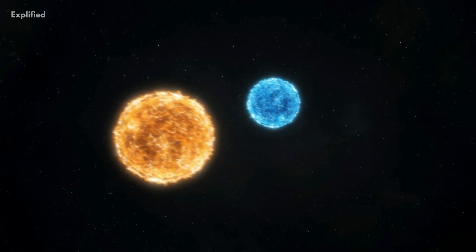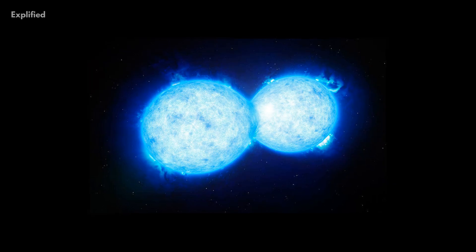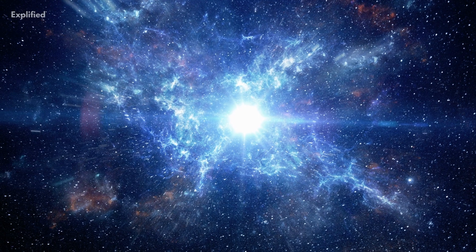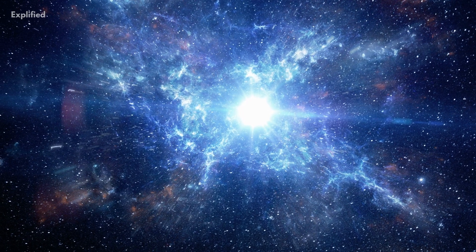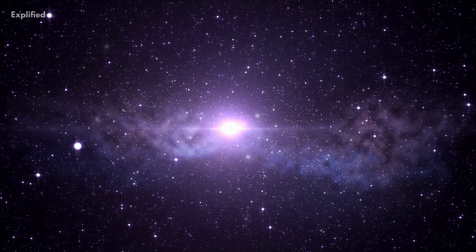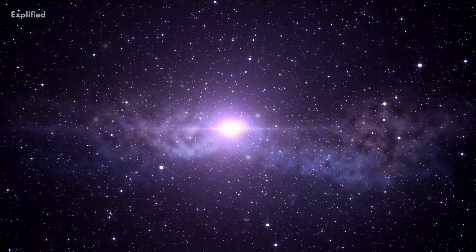Another way a supernova is formed is through binary stars. A binary star is a pair of stars that orbit at the same point. When one of the stars reaches a particular stage known as the white dwarf stage, it will absorb matter from the other neighboring star. Since the white dwarf star will have a high amount of matter, it will explode and form a supernova.